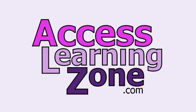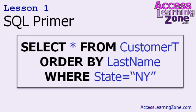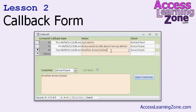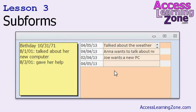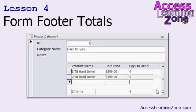Now let's take a closer look at exactly what's covered in today's class. In lesson one, we're going to learn a little bit about SQL — Structured Query Language — the language behind all the queries in your Access databases. In lesson two, we're going to create a callback form. A callback is simply a contact where you've indicated you want to call the customer back at some point in the future. We'll make a list of all of our callbacks plus a button to open that customer's record. In lesson three, we're going to learn about subforms — showing related records by embedding a smaller form inside of a larger form. In lesson four, I'm going to show you how to create form footer totals — for example, adding up all the quantities in a subform and putting that value in the subform's footer.